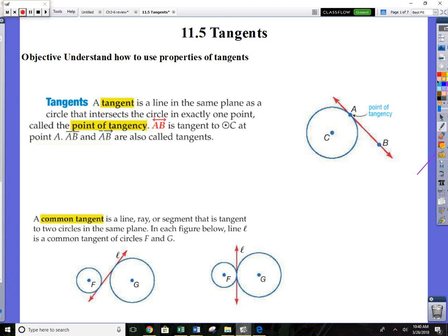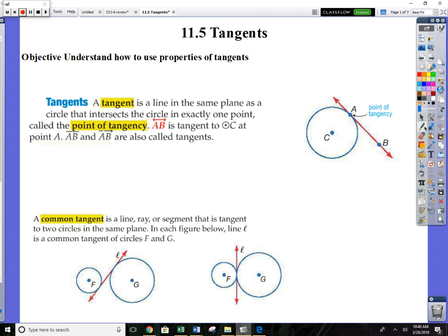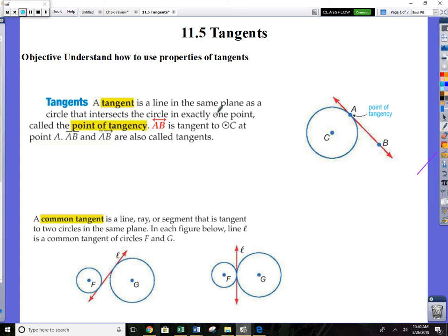All right, tangents. We're still playing around in circles. Here's the idea of a tangent: a tangent line is a line in the same plane as a circle that intersects the circle at exactly one point only once. We've talked about chords, which intersect the circle in two points. A tangent is going to go through the outside and touch the circumference of a circle at some point, but it only touches once.